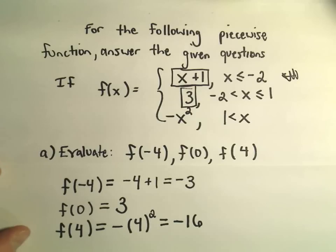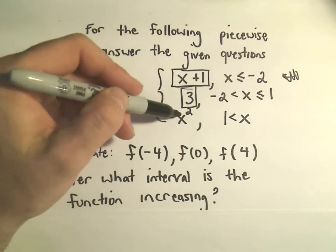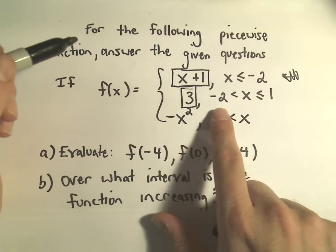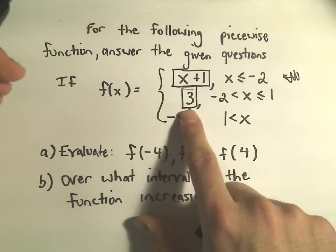So the other question here, part B said, over what interval is the function increasing? Well, let's maybe think about the last two intervals here first. For the x-coordinates between negative 2 and 1, the y-value is always just 3.